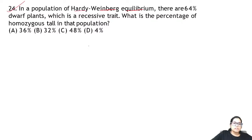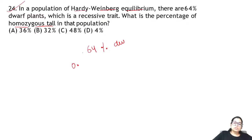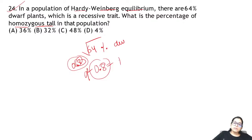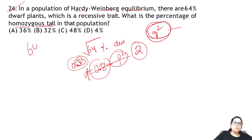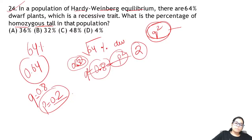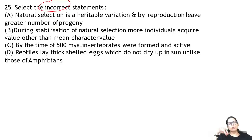Zoology Question 24: in a population in Hardy-Weinberg equilibrium, 64% of plants are dwarf — a recessive trait. Find the percentage of homozygous tall plants. Take the square root of 0.64 to get q = 0.8. Since p + q = 1, p = 0.2. Homozygous tall (p²) = 0.04 = 4%.